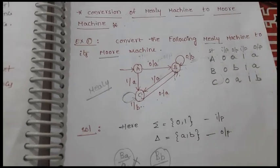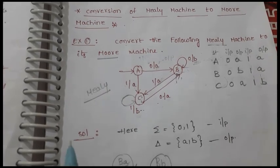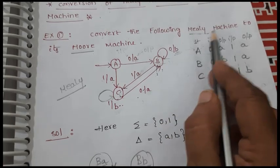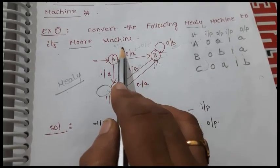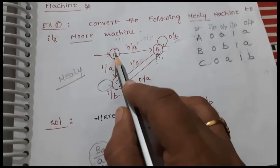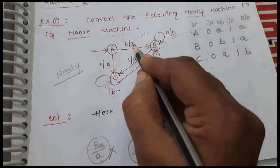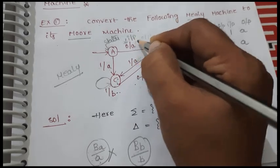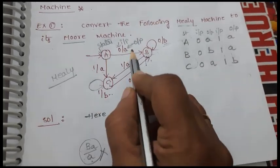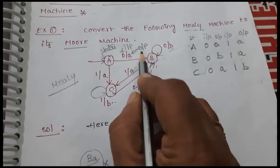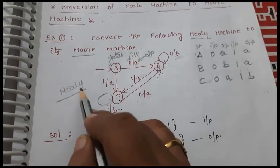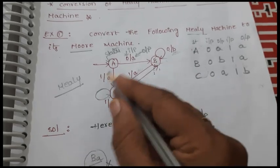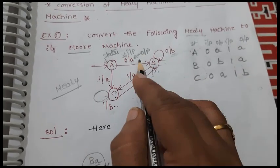In this session, let us discuss conversion of Mealy machine to Moore machine and Moore machine to Mealy machine. The objective is to convert a given Mealy machine into its Moore machine. In a Mealy machine, inputs as well as outputs are both associated with the states and transitions. Just by observing the state machine diagram we can say which kind of machine it is.